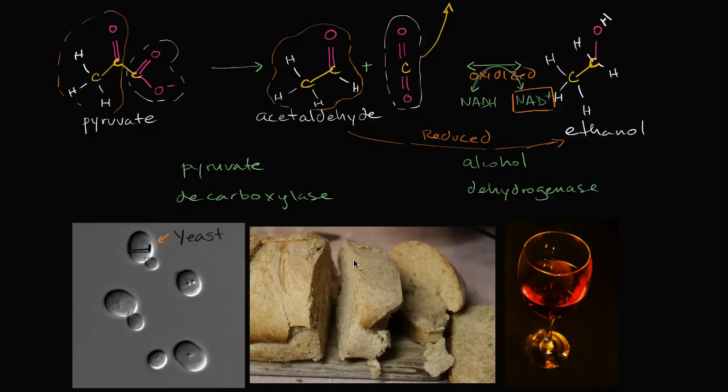What makes bread so fluffy is this step right over here. When the carboxyl group gets stripped off of the pyruvate, facilitated by the pyruvate decarboxylase, and the carbon dioxide gets released, it makes the bread fluffy. It bubbles through the dough and gives it this nice spongy flavor.